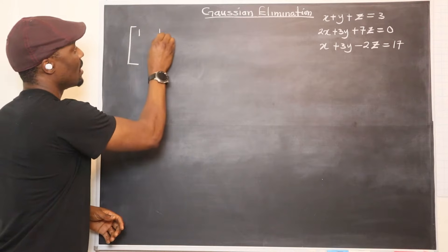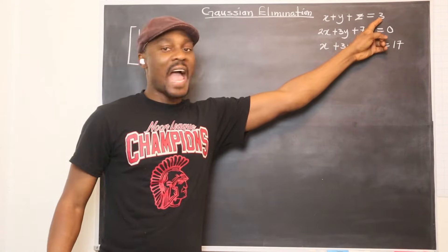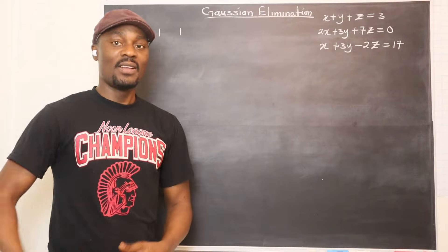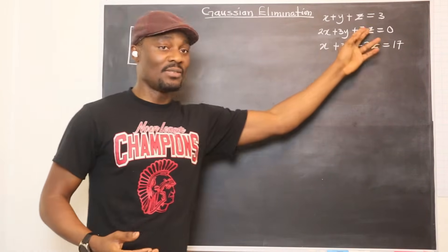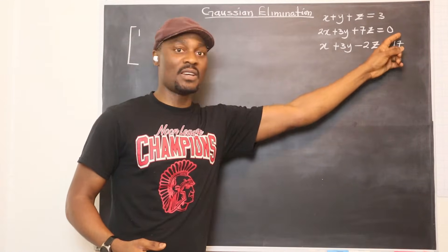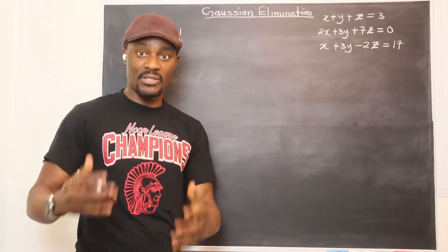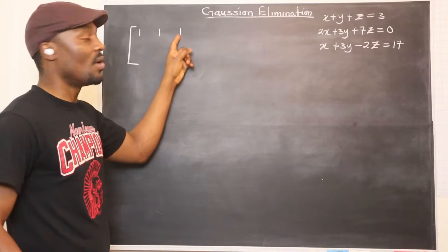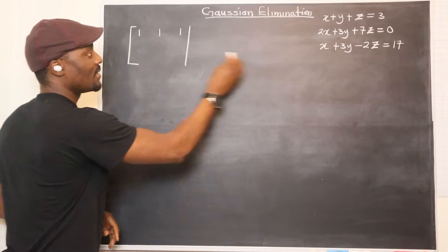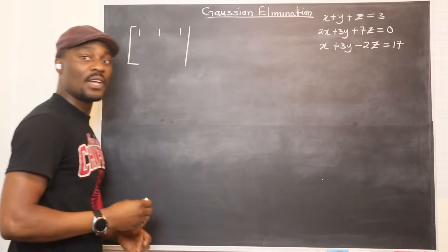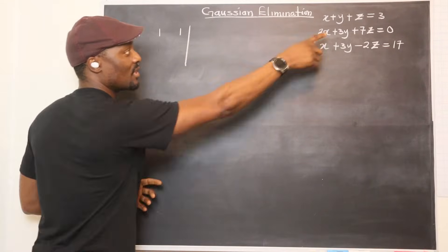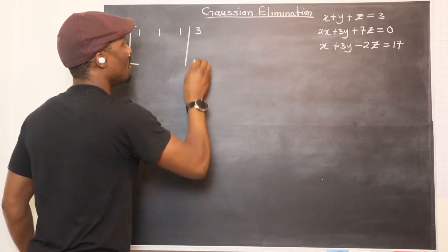One, one, one, one. And if you add the answers or the results of the expression — after you know the numbers, those numbers here — it becomes an augmented matrix. Because basically what you should have is one, one, one. But when you add the other side of it, it becomes what they call an augmented matrix. So let's just create an augmented matrix by adding this to it.